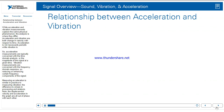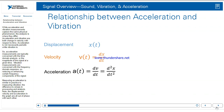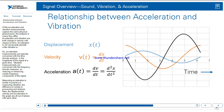While acceleration and vibration measurements capture the same physical phenomenon, the analysis is where they differ. Acceleration and vibration are both change in velocity with respect to time. Acceleration is not necessarily periodic, while vibration is. So acceleration measurements are typically concerned with time domain analysis, or the magnitude of the signal at a given time. Vibration measurements are concerned with the frequency domain response, reducing or enhancing certain frequency components. Measuring acceleration is similar in practice to measuring vibration — the difference is simply in processing and analysis.